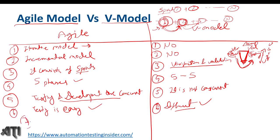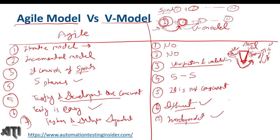The seventh difference: in Agile, testers and developers are dependent on each other. In the V-model, testers and developers are independent because both phases are separate. These are the differences between the Agile model and the V-model.